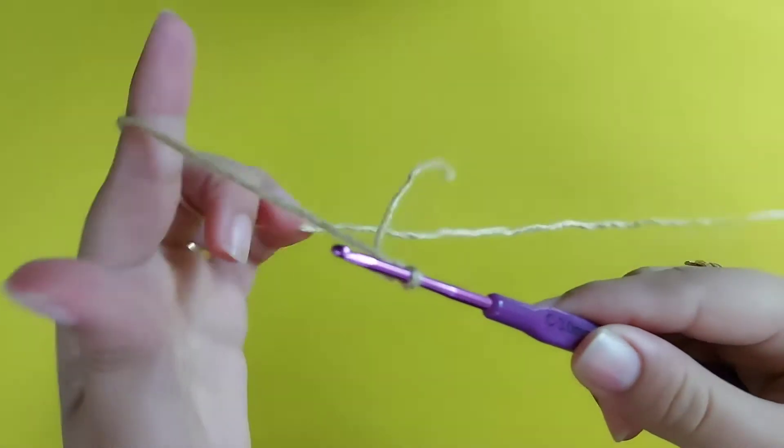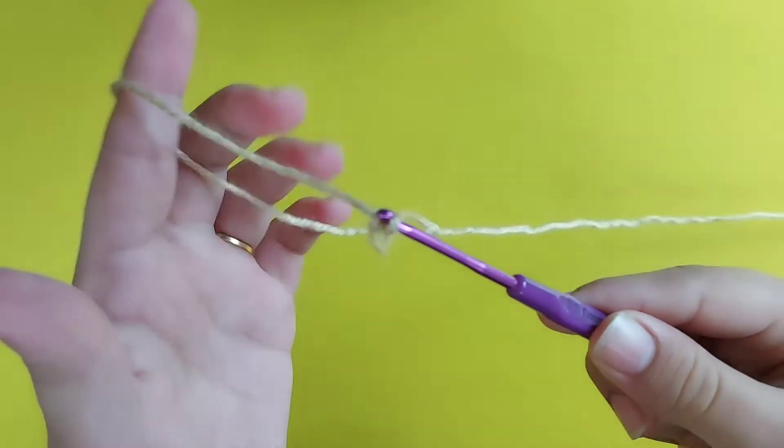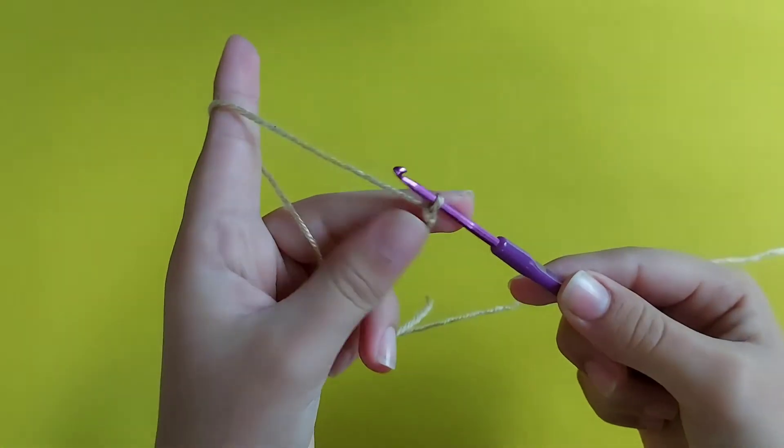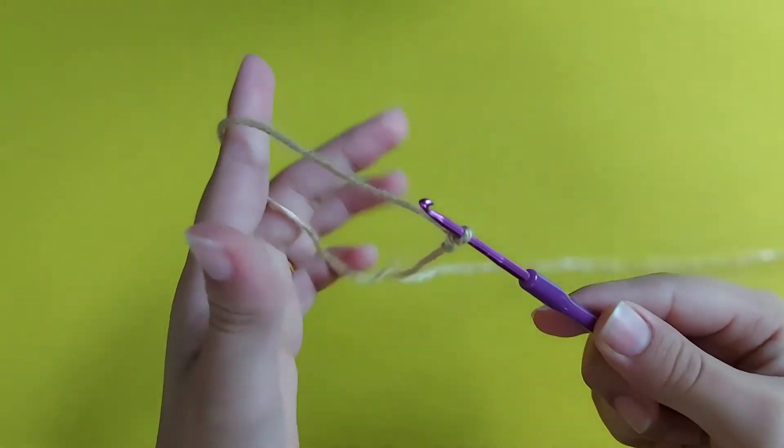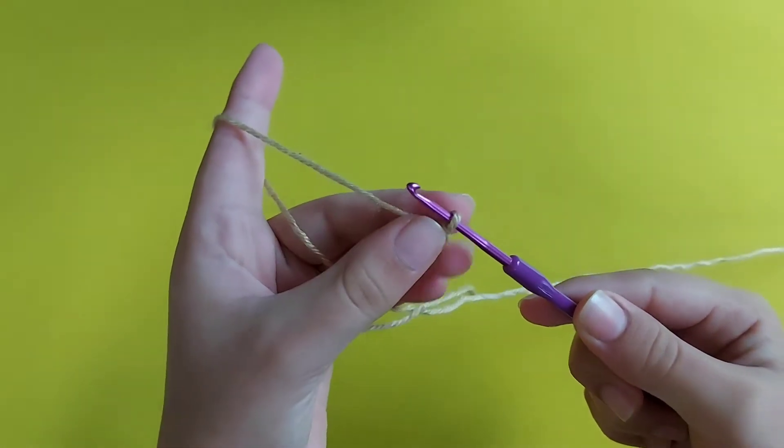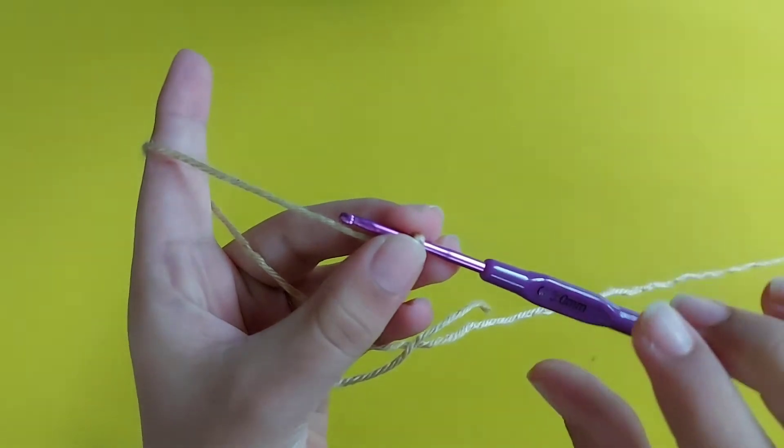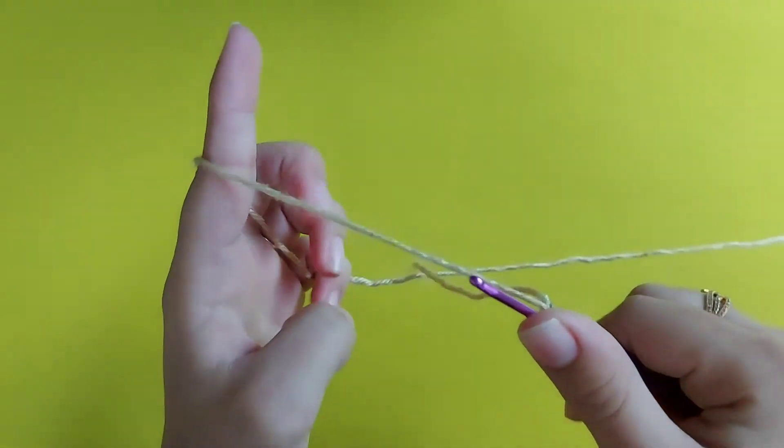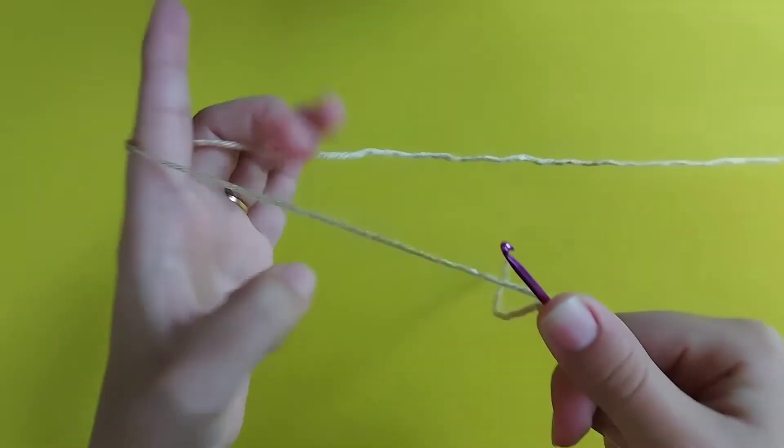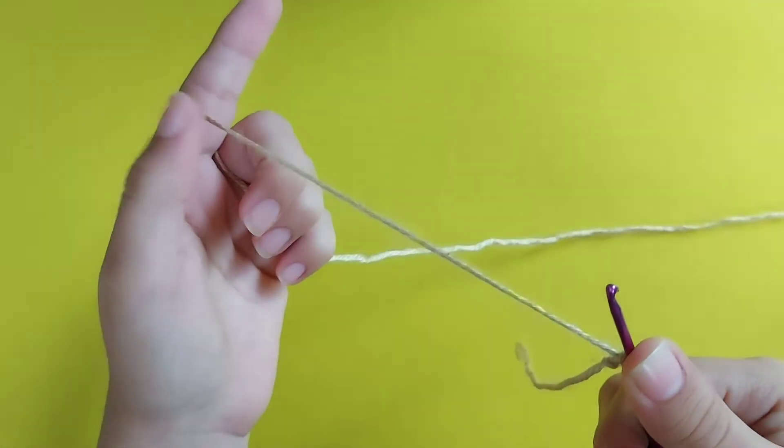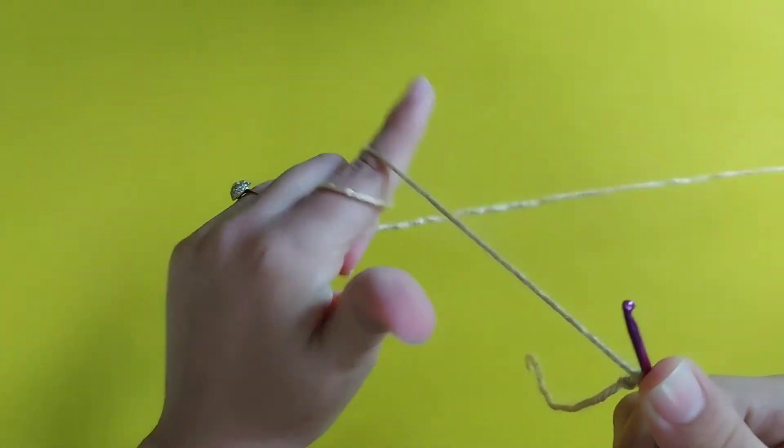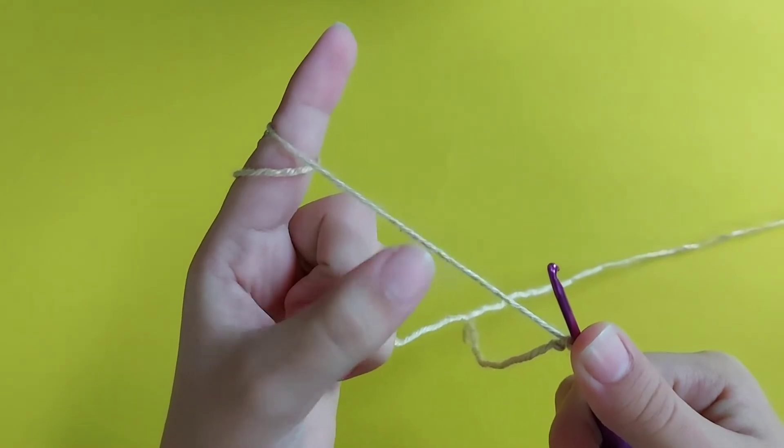With the hook, keep the working yarn. If you want to crochet with your right hand, you can put the working yarn on your index finger. You can do the same thing so you can use tension.